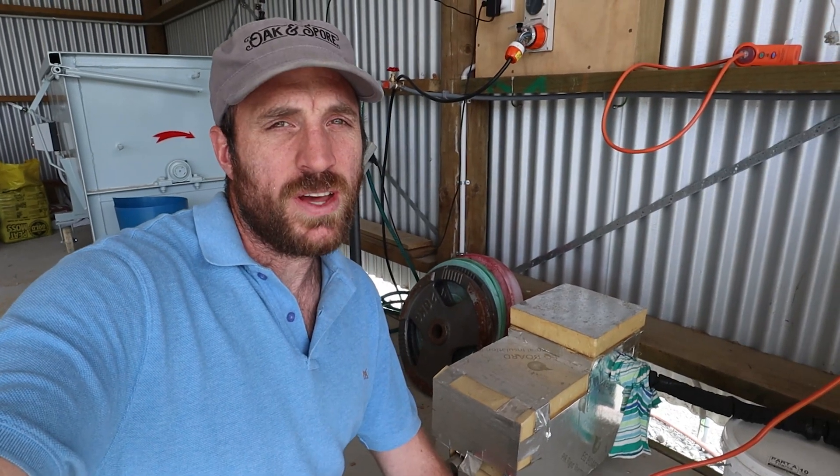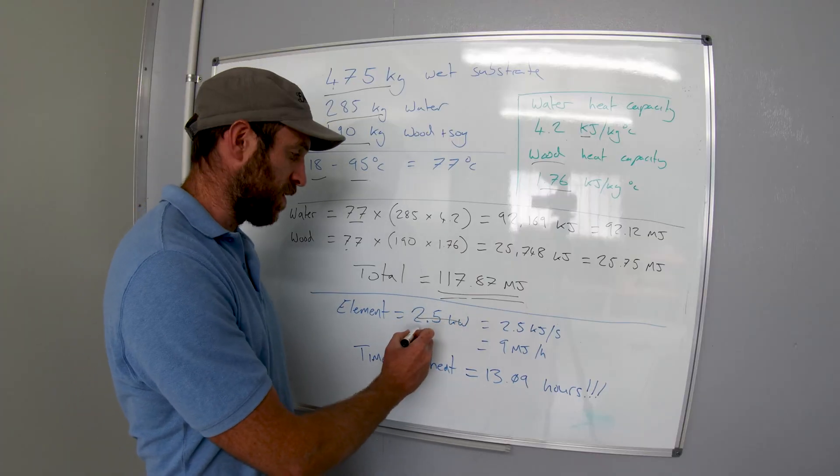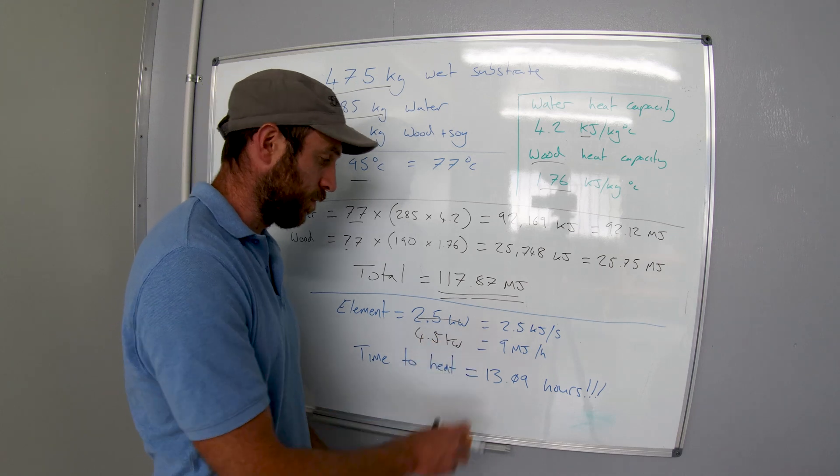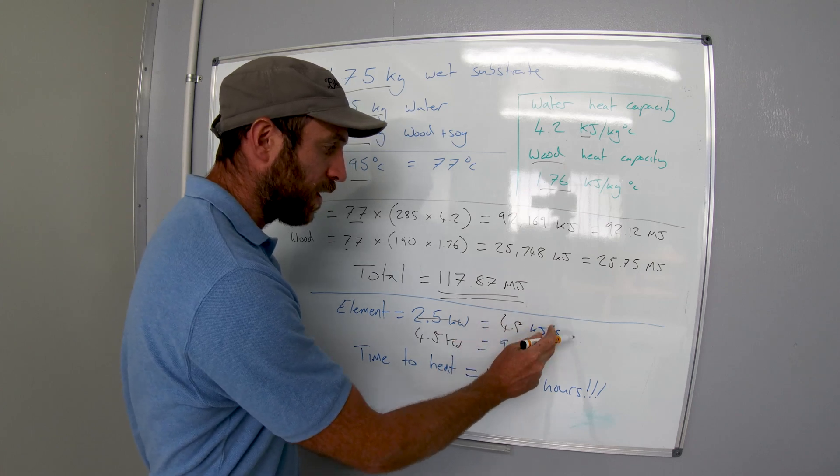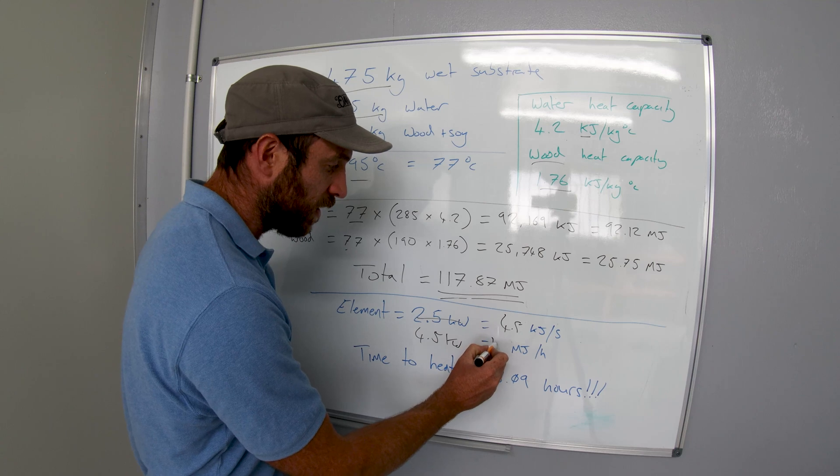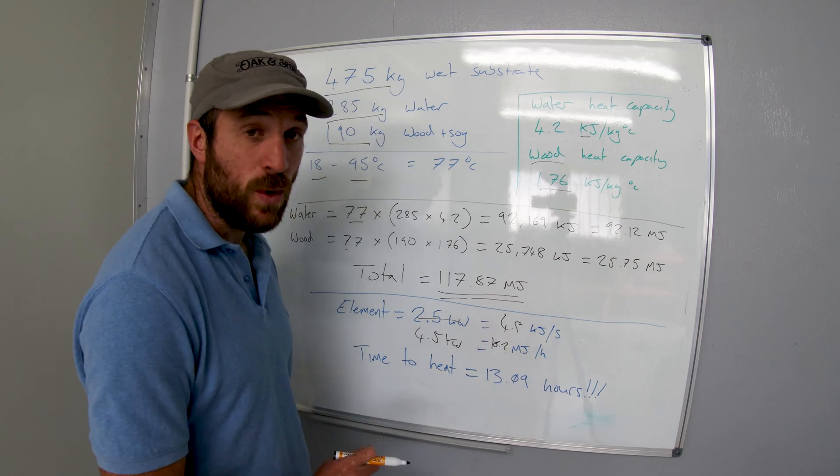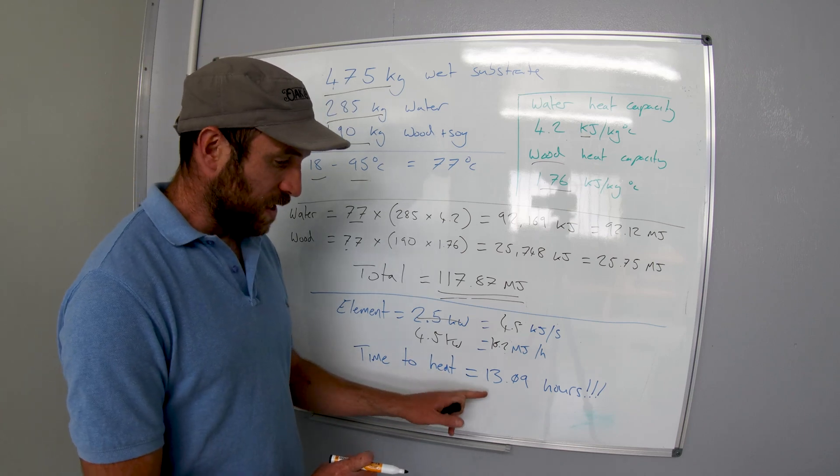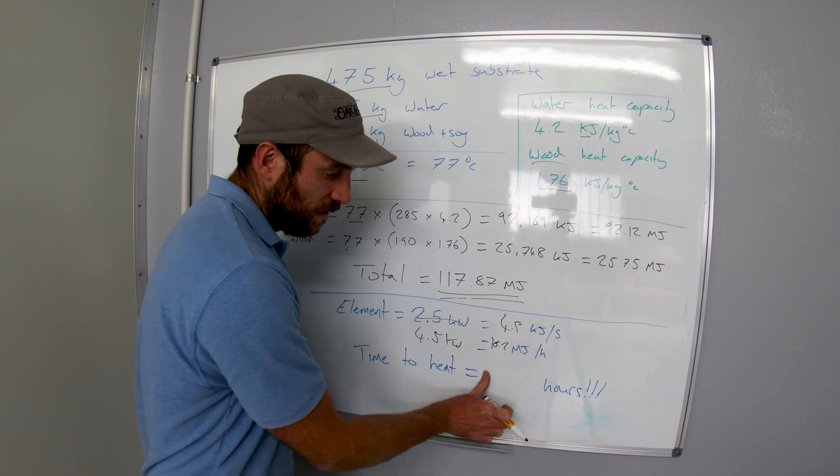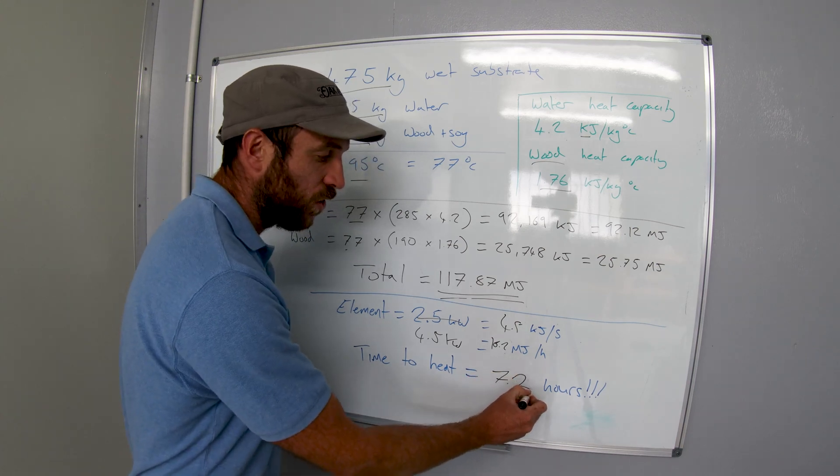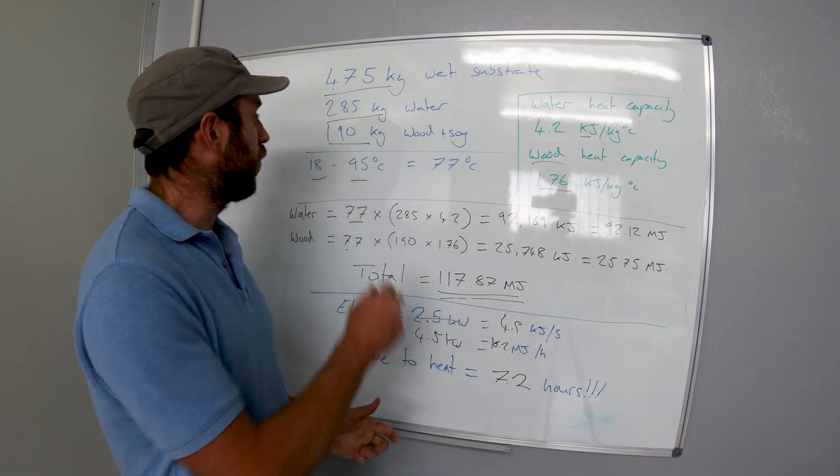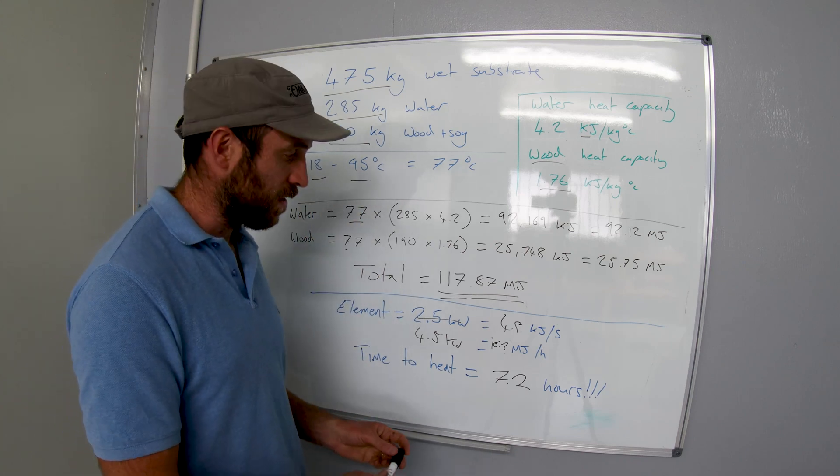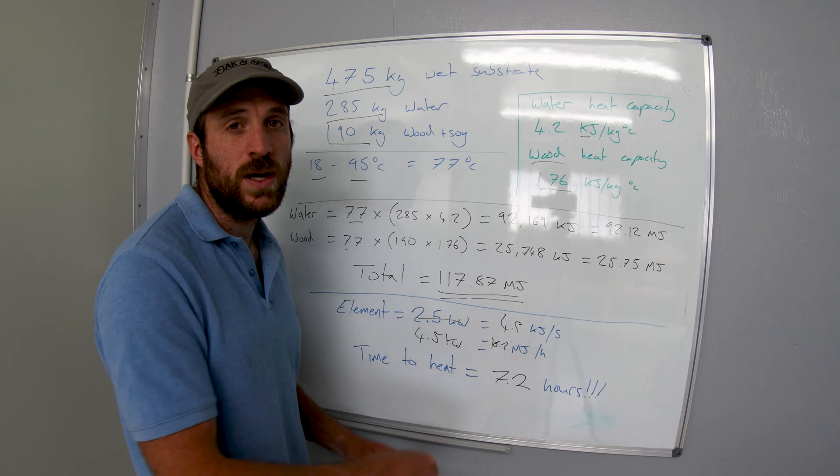But how much time will that take off the heat up? Well we can actually calculate that as well. Instead of a 2.5 kilowatt element we're going to put in a 4.5 kilowatt. 4.5 kilowatt element gives us 4.5 kilojoules a second or 16.2 megajoules an hour. Now that takes the time to heat up from 13.09 hours down to 7.2 hours. That means we can heat up roughly half a ton of substrate from 18 to 95 degrees Celsius in 7.2 hours.